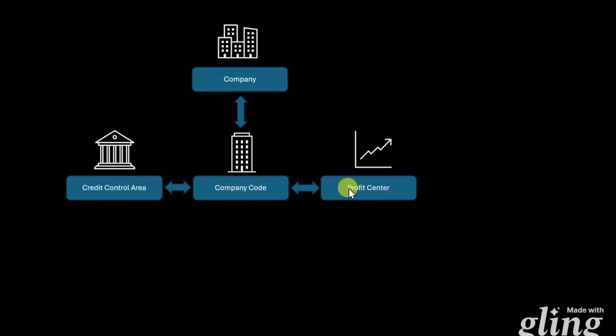Next up, we have the so-called profit centers. Profit centers are used to track our profit from an internal perspective. In SAP S4HANA, they are defined in the financial module, even though they are more relevant for the controlling module. We can assign one company code to one or even multiple profit centers.